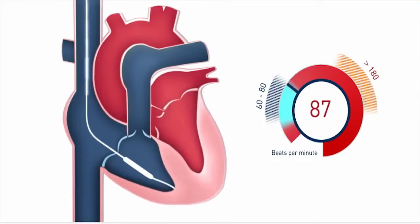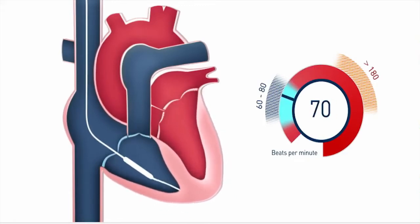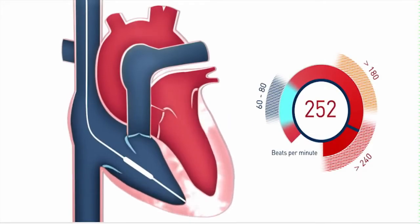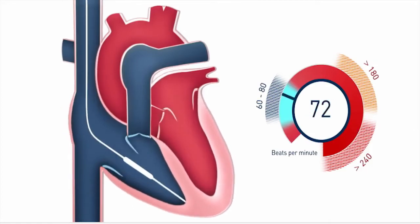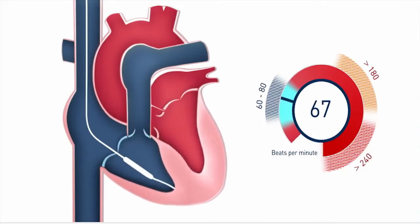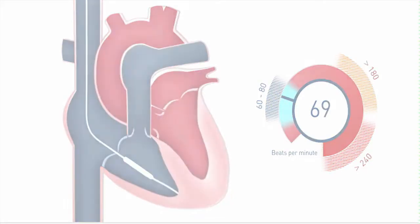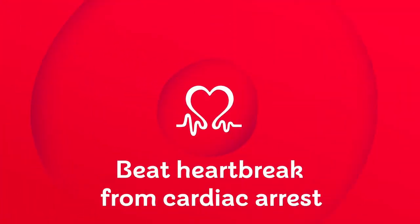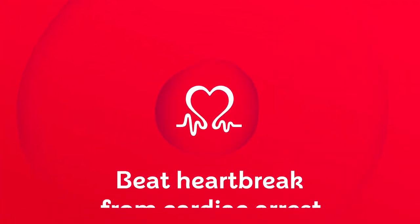When an abnormal heart rhythm is detected, the ICD delivers a shock to re-establish a normal rhythm. Patients with heart failure and/or previous myocardial infarctions are at risk for sudden cardiac death and can benefit greatly from an ICD. For this reason, patients with stage B heart failure precipitated by an MI are often outfitted with an ICD.